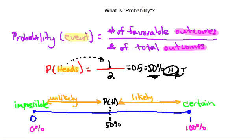As a quick recap, the key things to take away are: first, probability is a ratio that compares favorable outcomes to total outcomes. Second, understand the difference between an event and an outcome — the event is flipping a coin and the desired outcome is getting heads — giving us a ratio of 1 to 2. Third, probability is a range between 0 and 1, or 0% and 100%.